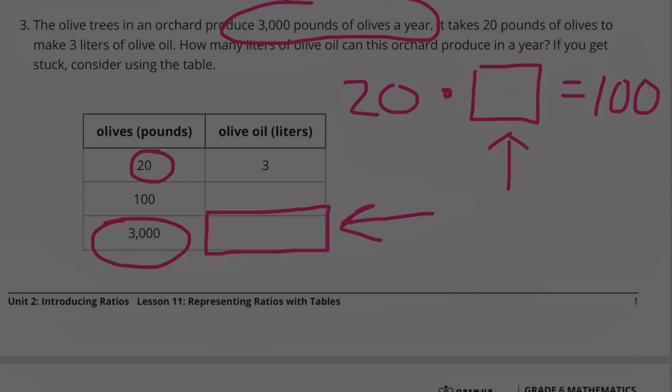What number times 20 equals 100? 5. 5 times 20 equals 100. If we multiplied the 20 times 5 to get 100, then we'd have to multiply the 3 times 5. That would give us 15.